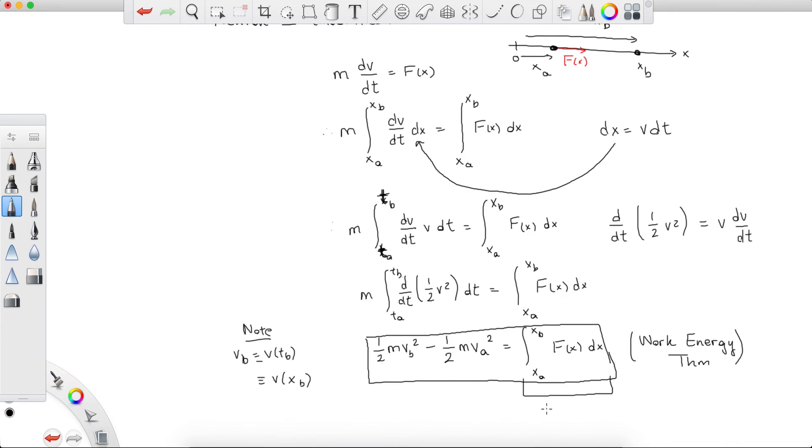Why work energy? Because this integral right here is called the work done by f of x, because this force moves the particle from position xa to xb, and the integral of the force with respect to position from xa to xb is the quantity that we call work. And it is equal to this difference right here, this is the difference in kinetic energy.